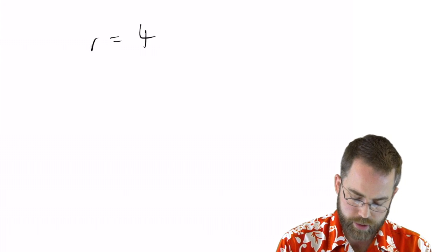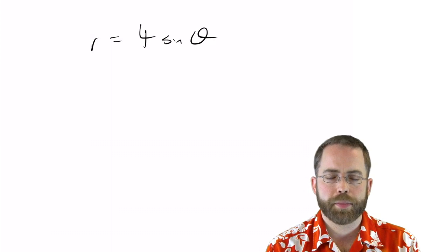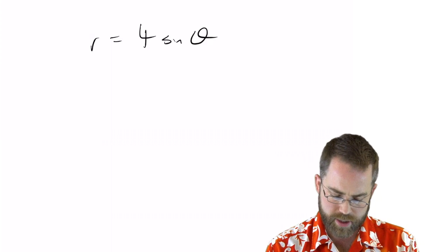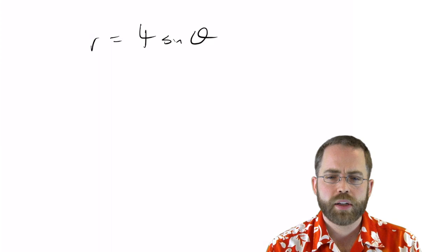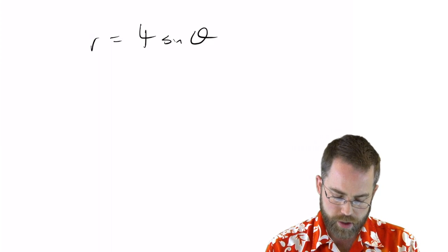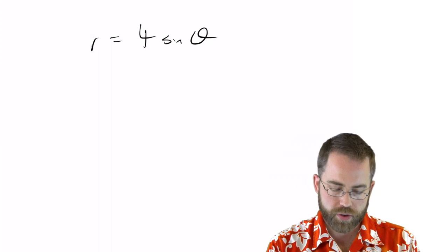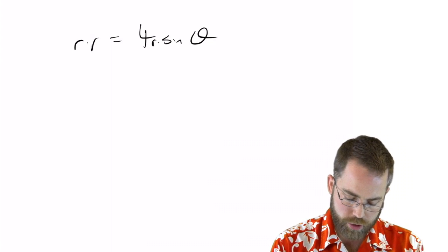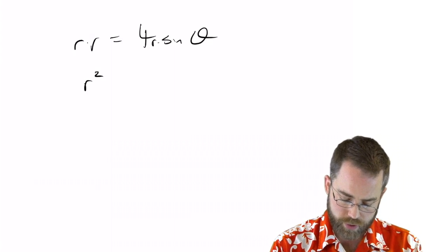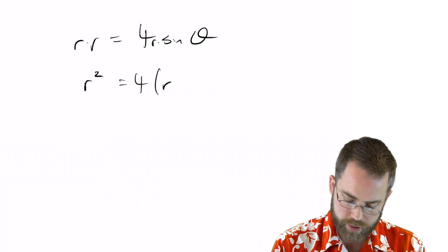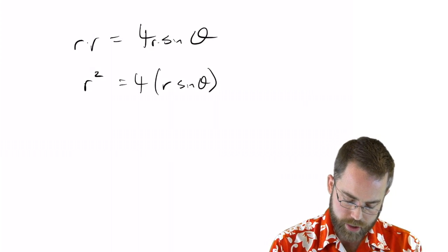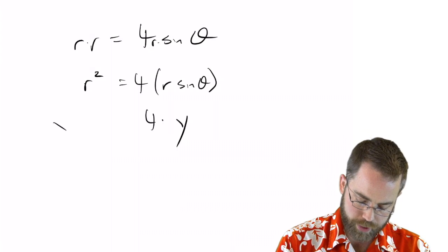Next up, we've got r equals four sine theta. Hmm, that's not something totally obvious. The r and the sine, I wish they were next to each other. So I'm not able to convert those because multiplying both sides by sine will make a mess. But if I multiply both sides by r, then I'll get r squared over here, which is one of our equations. And I'll get four r sine theta, which is one of our equations. r sine theta is y, and r squared is x squared plus y squared.